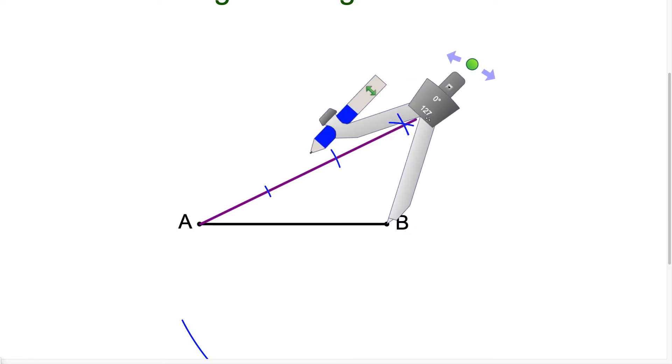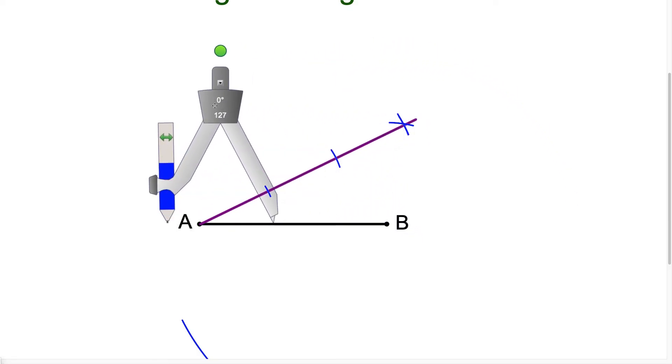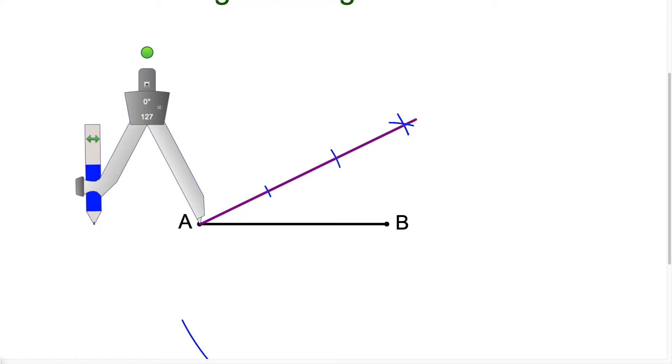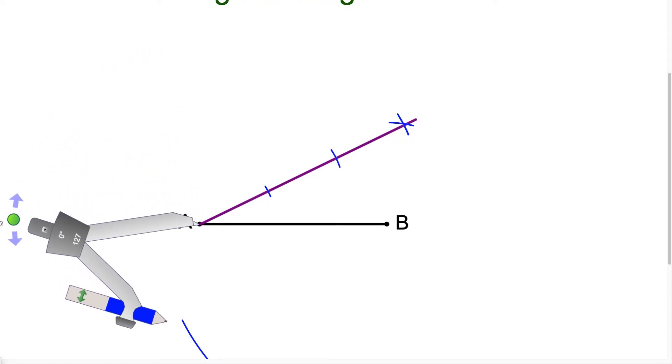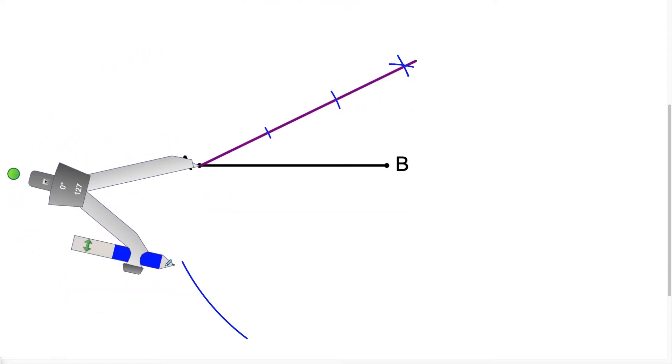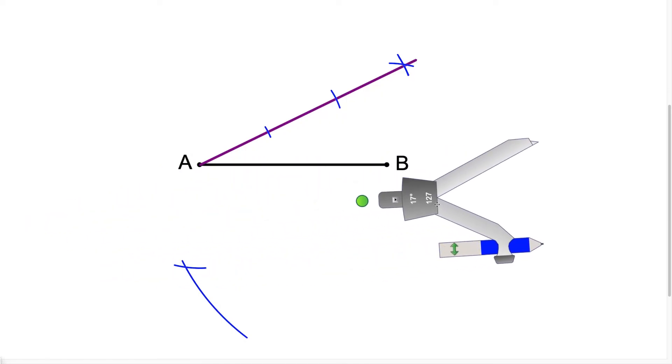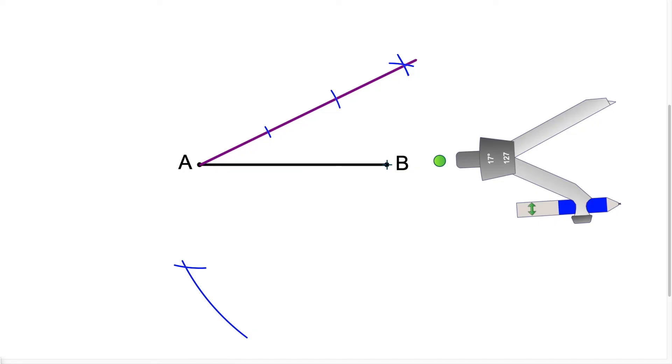So now that distance I'm going to keep and I'm going to move it over to point A. And from here what we want to do is we want to place the compass on A and we're going to swing an arc like this and notice that this arc intersects the one we just made before. So now I'm going to draw in my line and I'm coming in from point B and I'm going to draw it so that it intersects the intersection of those two arcs.